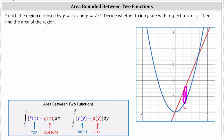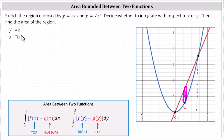So we need to find the x coordinates for the points of intersection. You can see one is at x equals zero, and there is another point where the x value is not immediately clear. To find this x value, we'll have to solve the two equations as a system and solve for x. So we have y equals 5x and y equals 7x squared.